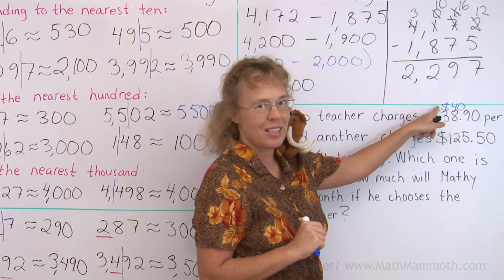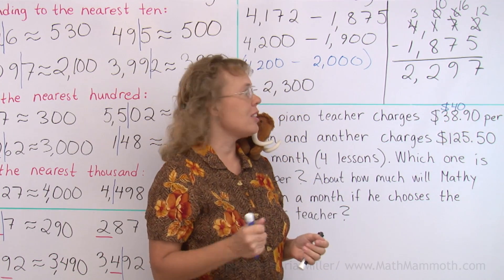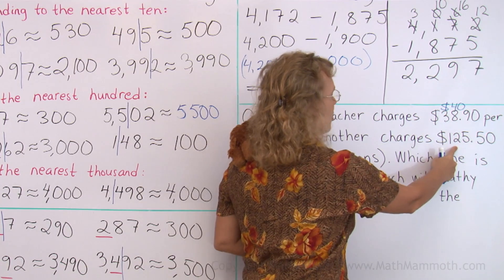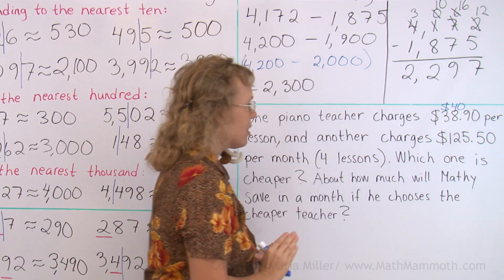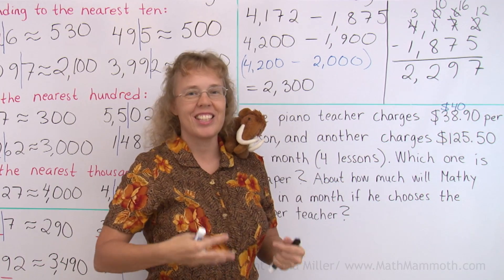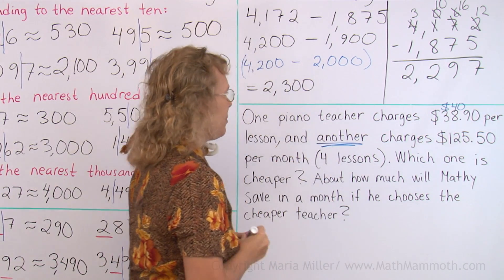We take four times this easy number, $40. Four times 40 is $160. And this other one charges only $125.50 for four lessons. So clearly the second teacher is cheaper, right? This one is the cheaper teacher, the second one.